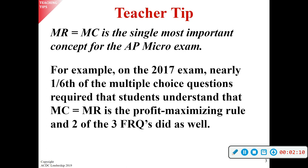MR equals MC is present with each of the four market structures. In 2017, it accounted for one-sixth of the multiple-choice questions — about 11 out of 66 questions had something to do with profit maximizing. It was also on two out of the three FRQs. The first FRQ is the long FRQ worth ten points, and then the second and third were short FRQs worth five points apiece. It comes up a lot.